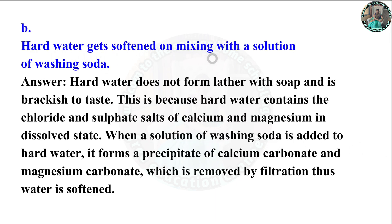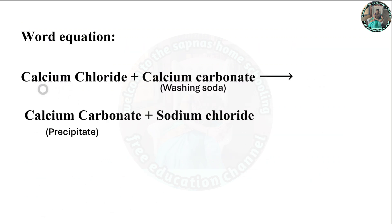Hard water gets soft on mixing with a solution of washing soda. Hard water does not form a lather with soap and is brackish to taste, because it contains chloride and sulphate salts of calcium and magnesium in dissolved state. When washing soda solution is added to hard water, it forms a precipitate of calcium carbonate and magnesium carbonate, which is removed by filtration, thus softening the water. Equation: calcium chloride + washing soda (sodium carbonate) → calcium carbonate (precipitate) + sodium chloride.